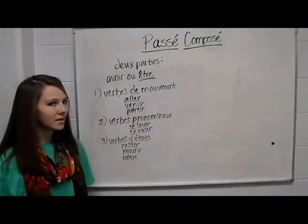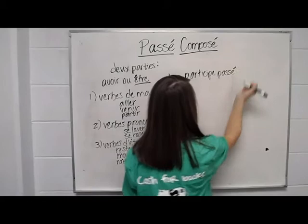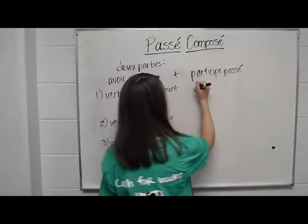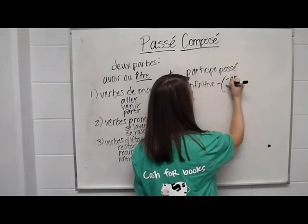The second part of the passé composé is going to be the past participle. The past participle is formed using the infinitive of the main verb. And then you're going to take away the ending, which will be the -er, -re, or -ir.